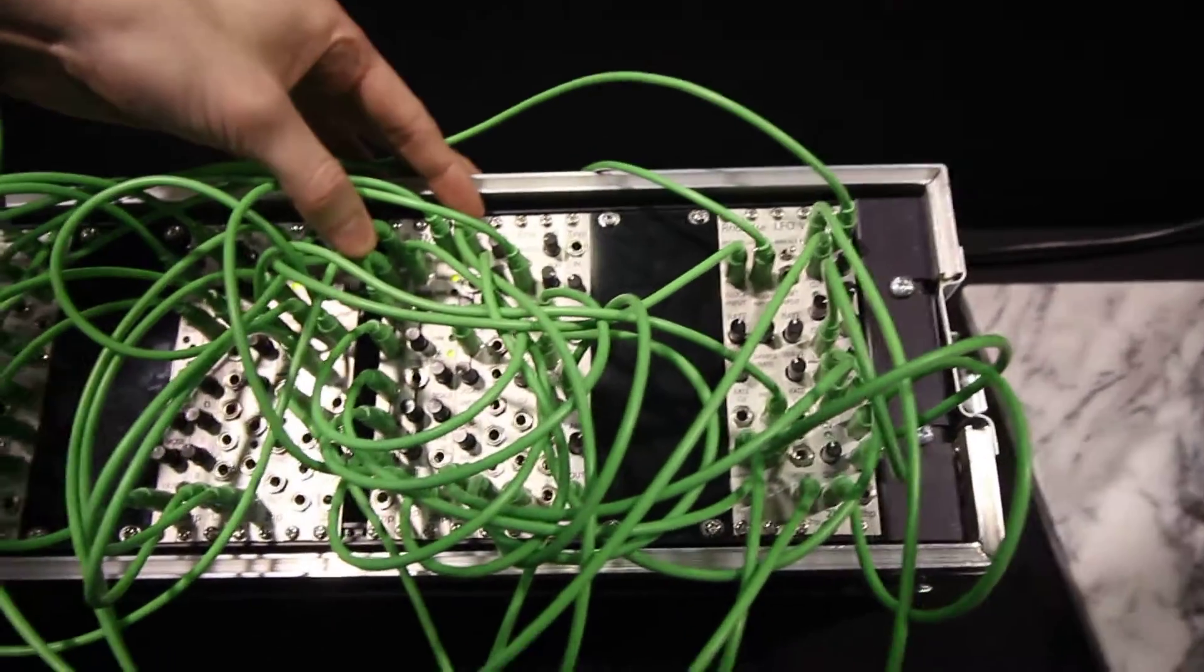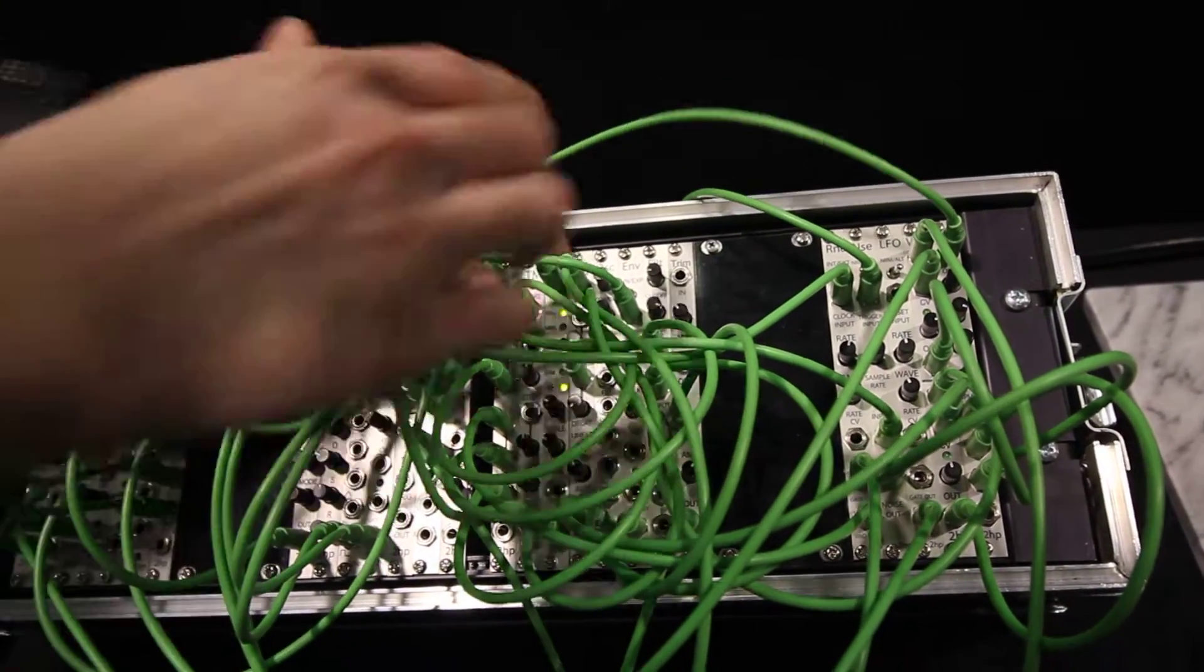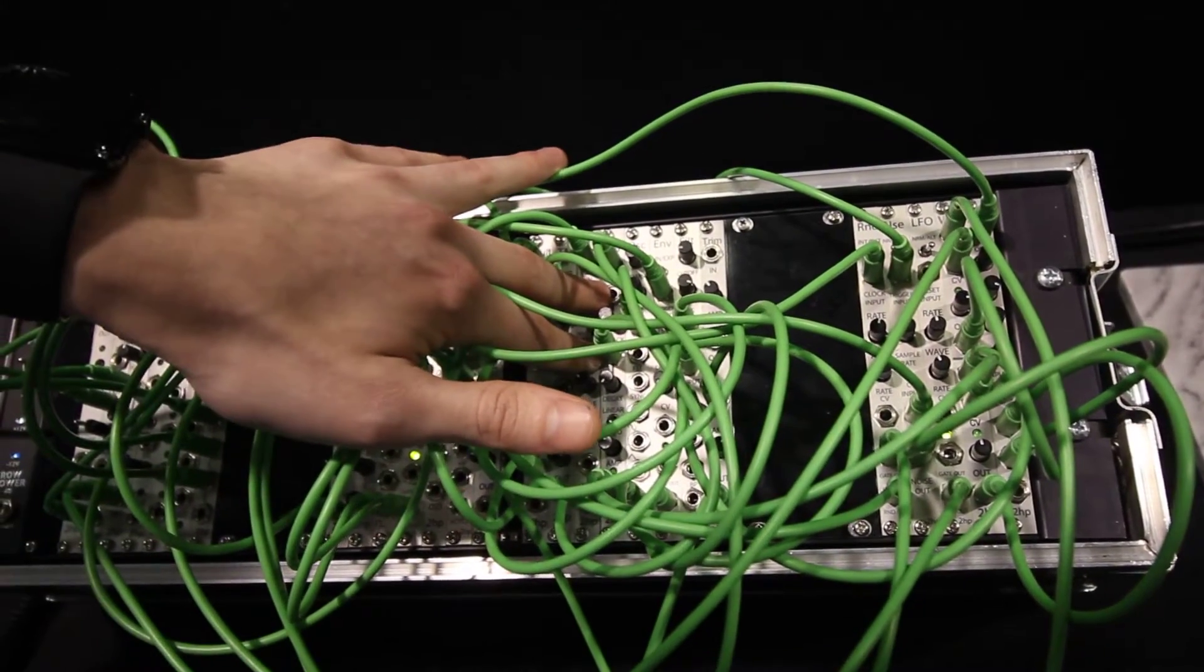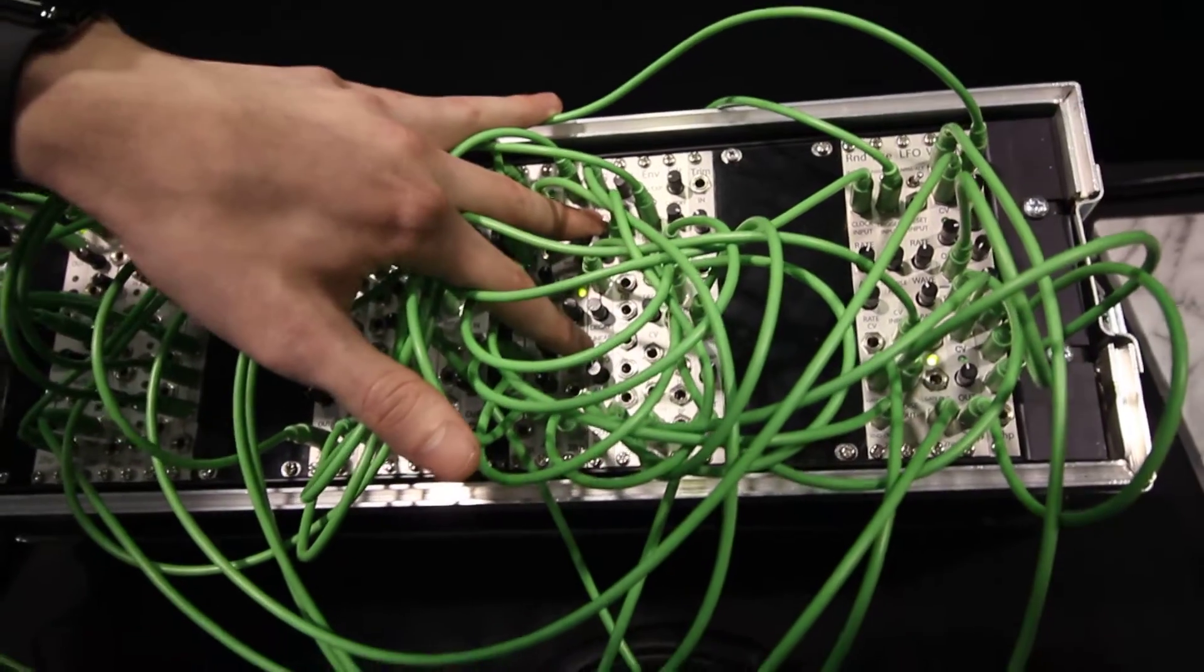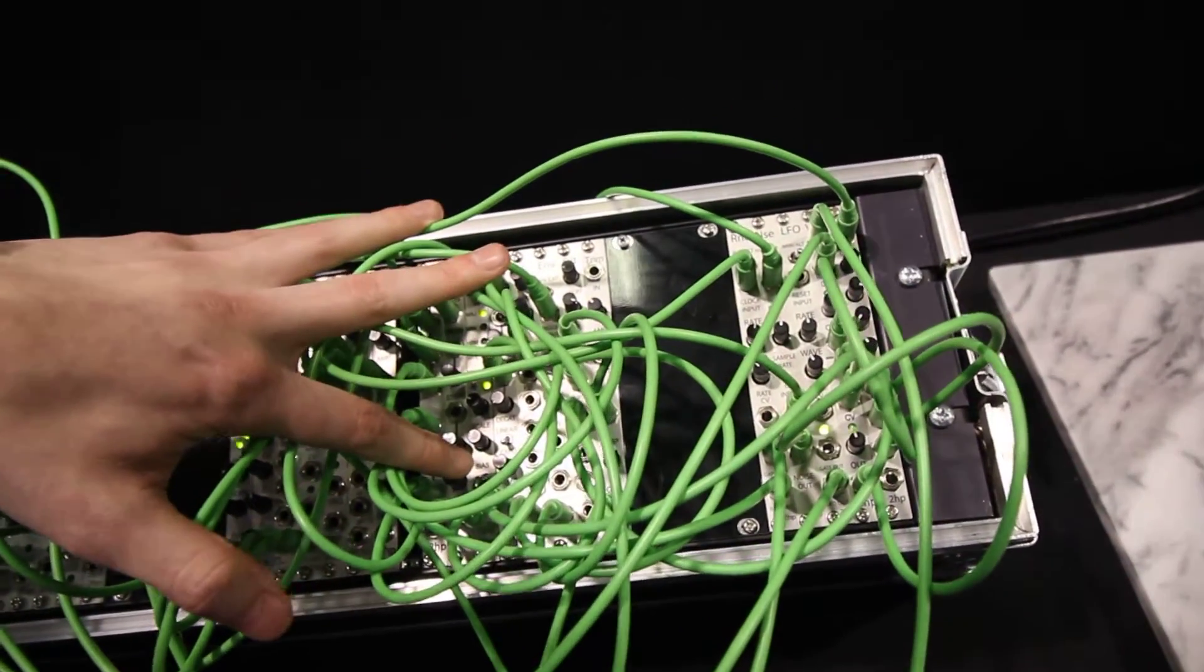The next new module we have is the EG. It's an attack decay envelope with trigger input, CV over attack and decay, linear exponential switching, as well as an amplitude output to scale your output from 10 volts down to 0 volts.